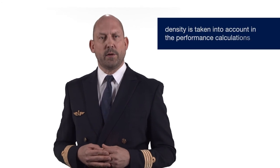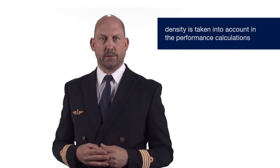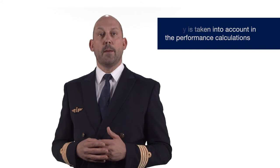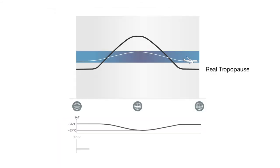Of course, the influence of pressure and temperature are taken into account when we do our aircraft performance calculations. So, back to our aircraft in the cruise. With changing temperature, the thrust would change as well. But again, if we've entered the parameters for temperature and tropopause, this will be taken into account by the FMS.